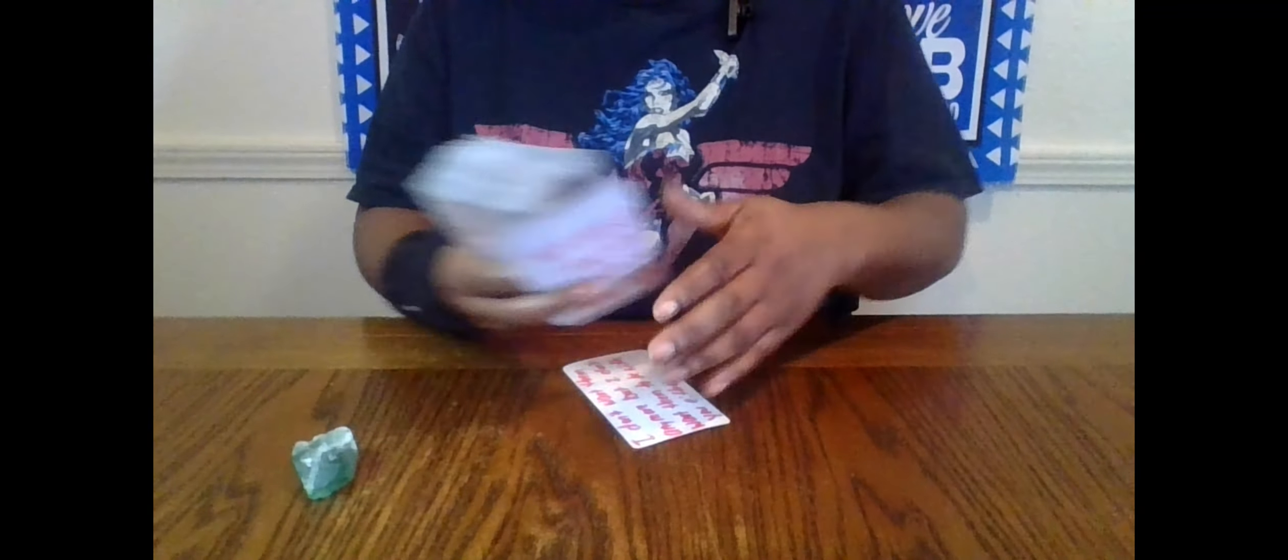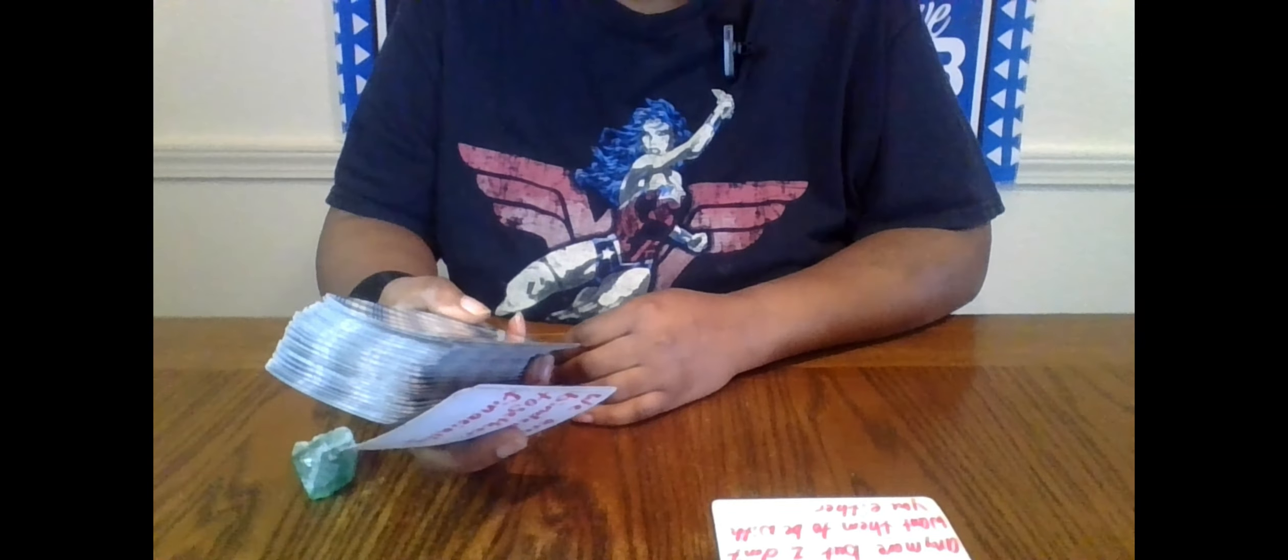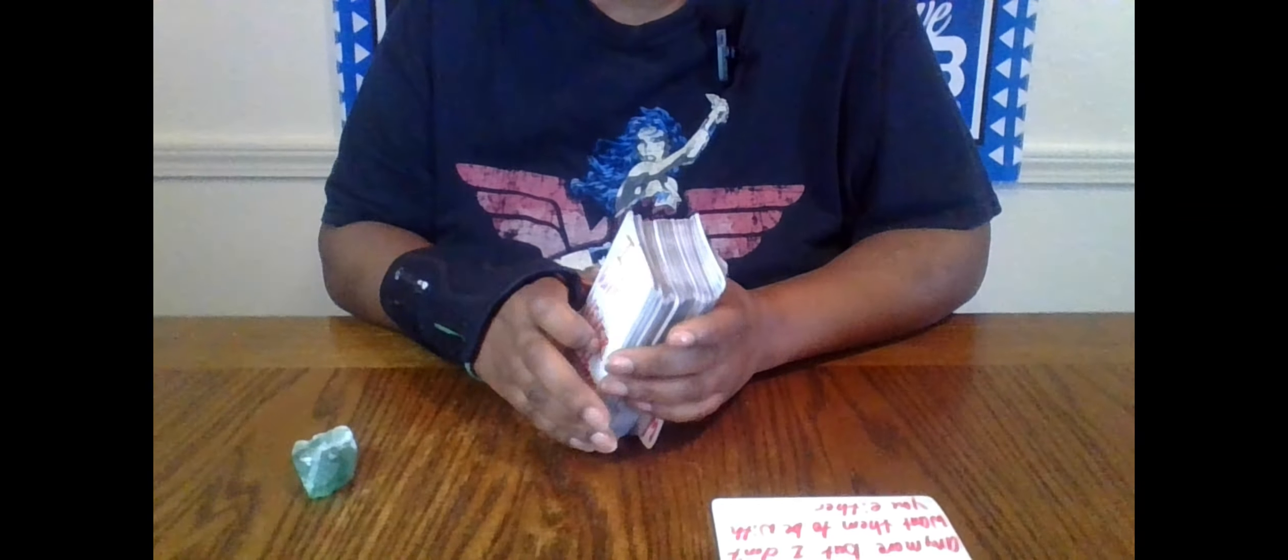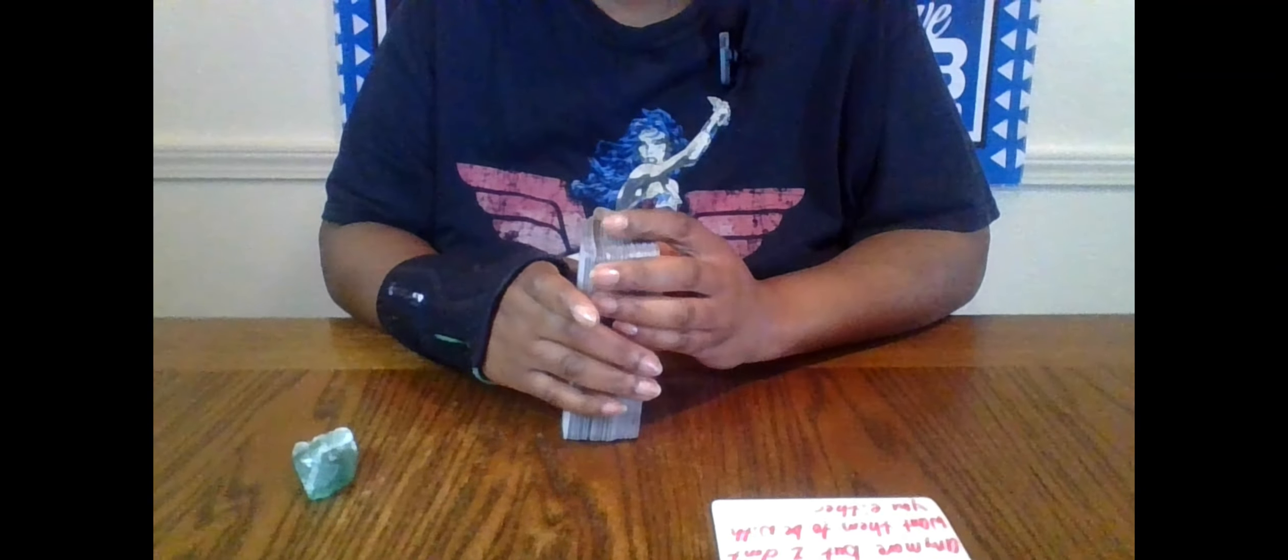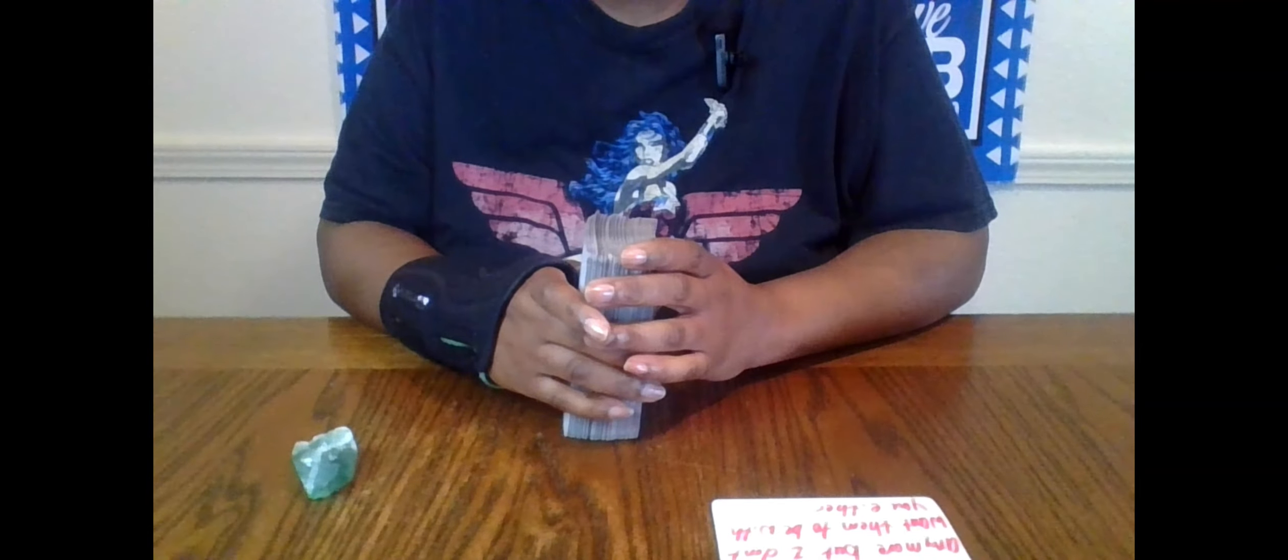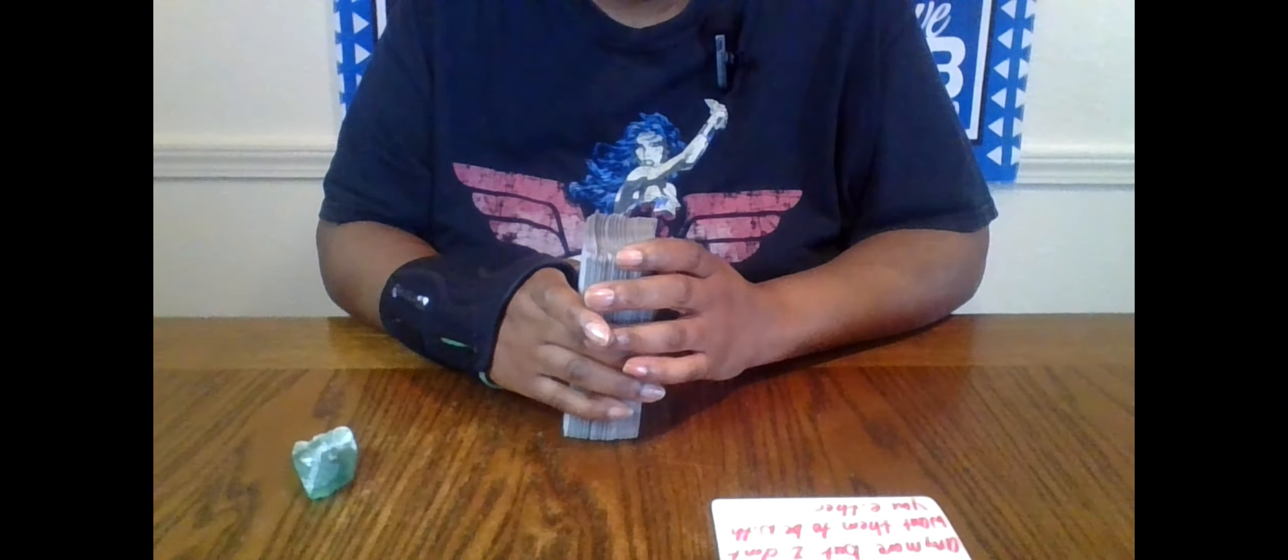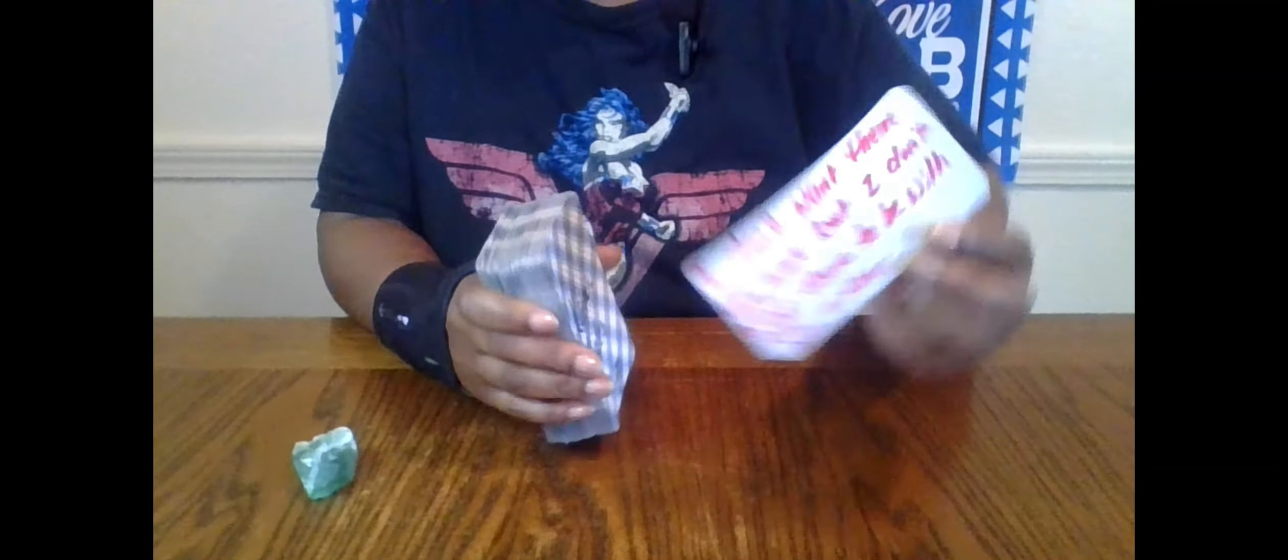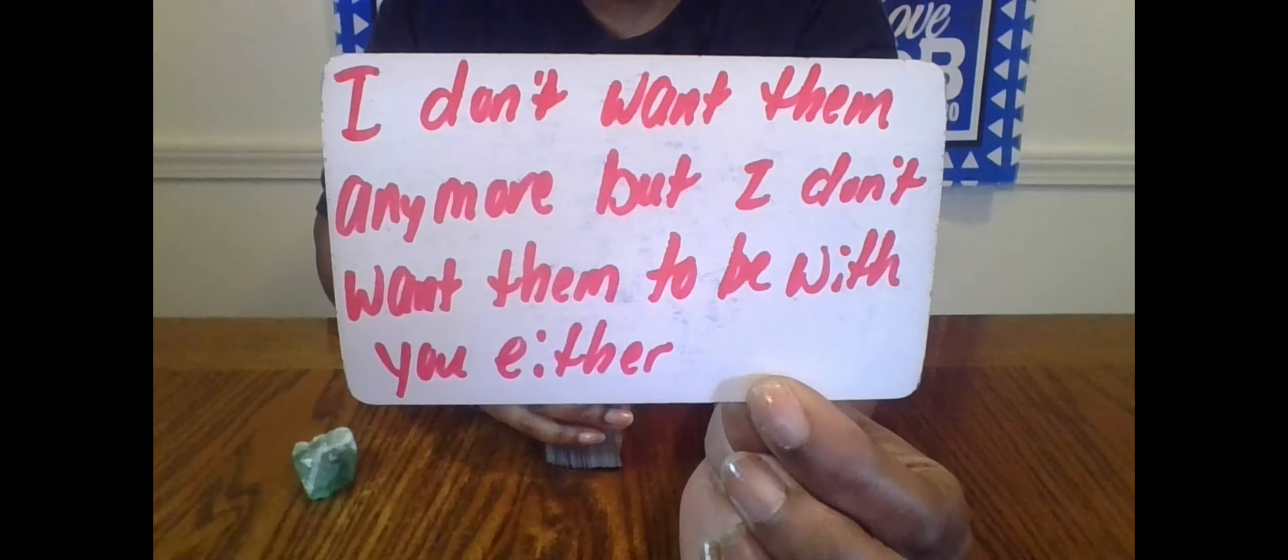Alright y'all, let's see what's going on. Oh damn, that's a dick. I don't want them to be with them anymore, but I don't want you to be with them either. So there's a third party that's keeping this person stuck because they really don't want them anymore, but at the same time Scorpio, they don't want you to have them either. So they're making it hard for this person to make some type of decision here.